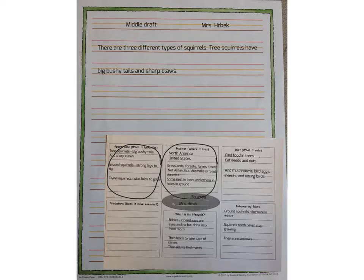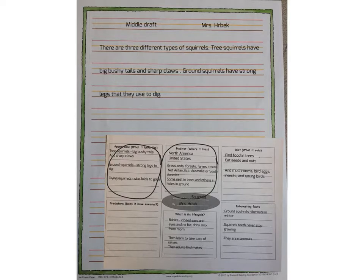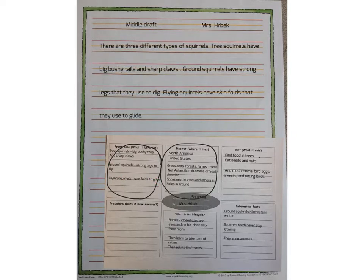After you've done that, you can start with your second fact. My second fact is about ground squirrels and their legs. I'm going to turn this into a sentence and write it on my draft paper. Here's my sentence: 'Ground squirrels have strong legs that they use to dig.' Now I'll turn my last fact into a sentence. The fact said flying squirrels have skin folds that they use to glide. See that that sentence is right here in my draft.